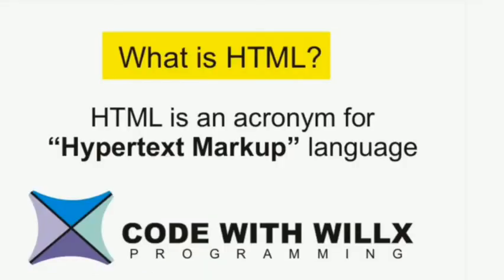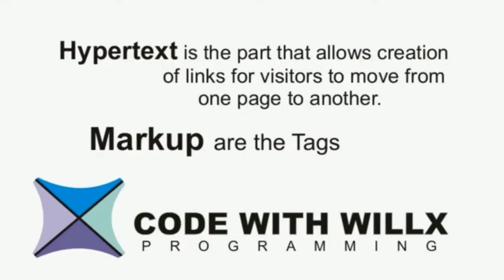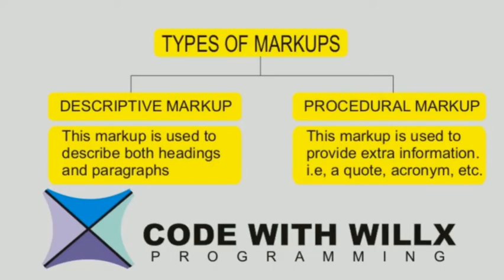HTML is an acronym for hypertext markup language. Hypertext is the part that allows creation of links for visitors to move from one page to another. Markups are the tags. There are two kinds of markups: descriptive markup and procedural markup. The descriptive markup is used to describe the endings and paragraph, while the other part is used to describe extra information.